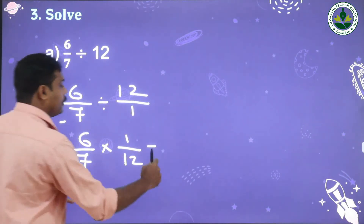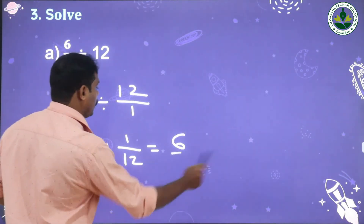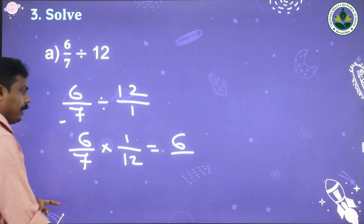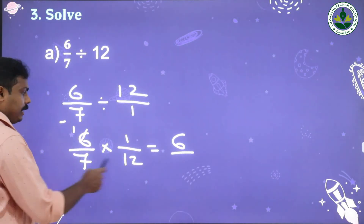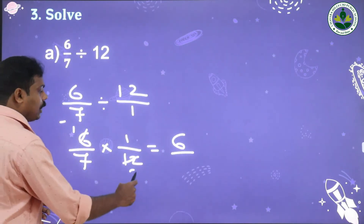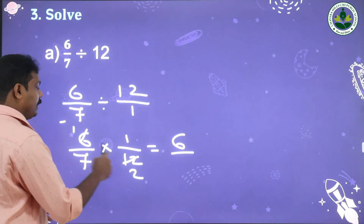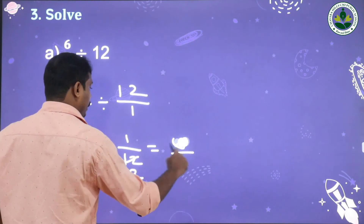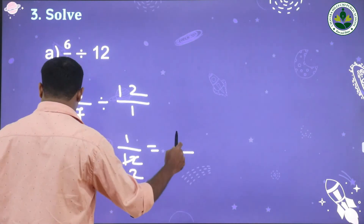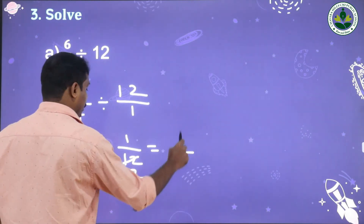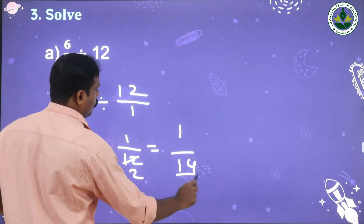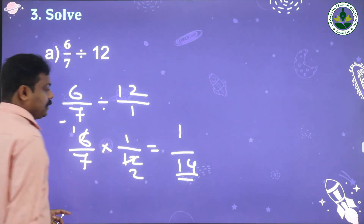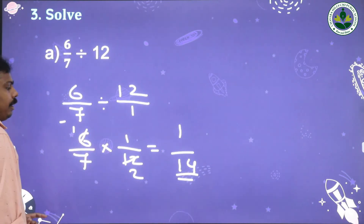We can cancel 6 and 12. 6 ones are 6, and 6 twos are 12. Now it is 1 into 1 equals 1, and 7 into 2 equals 14. The answer is 1/14.